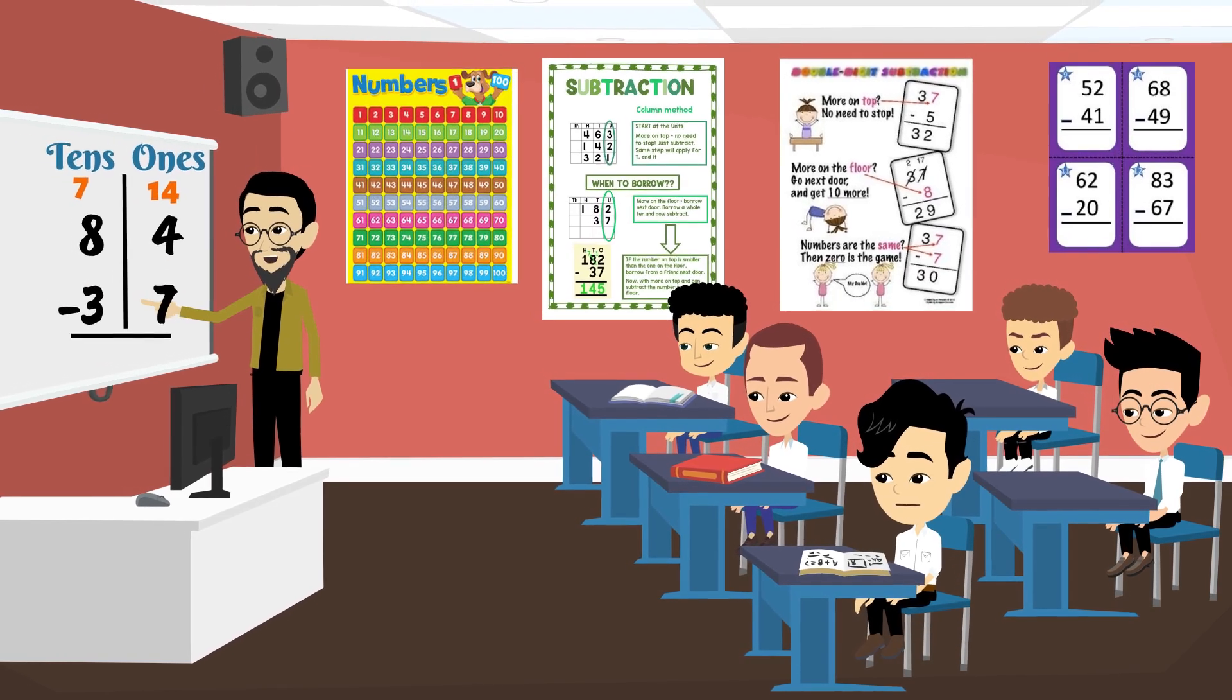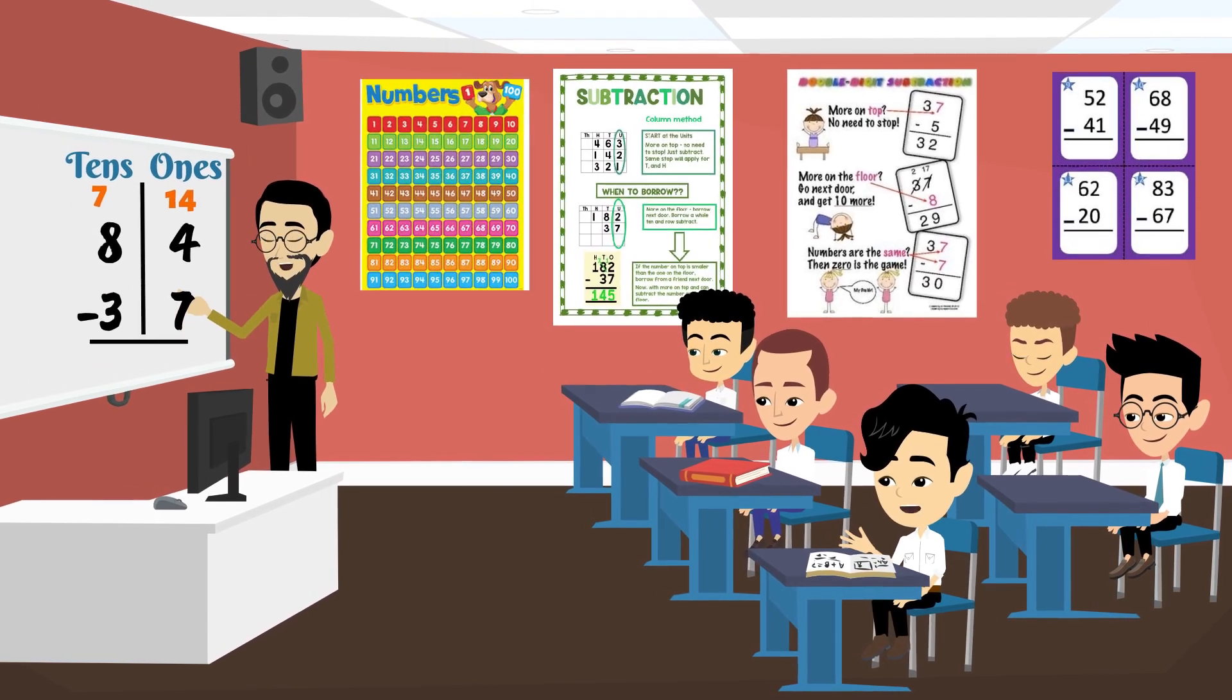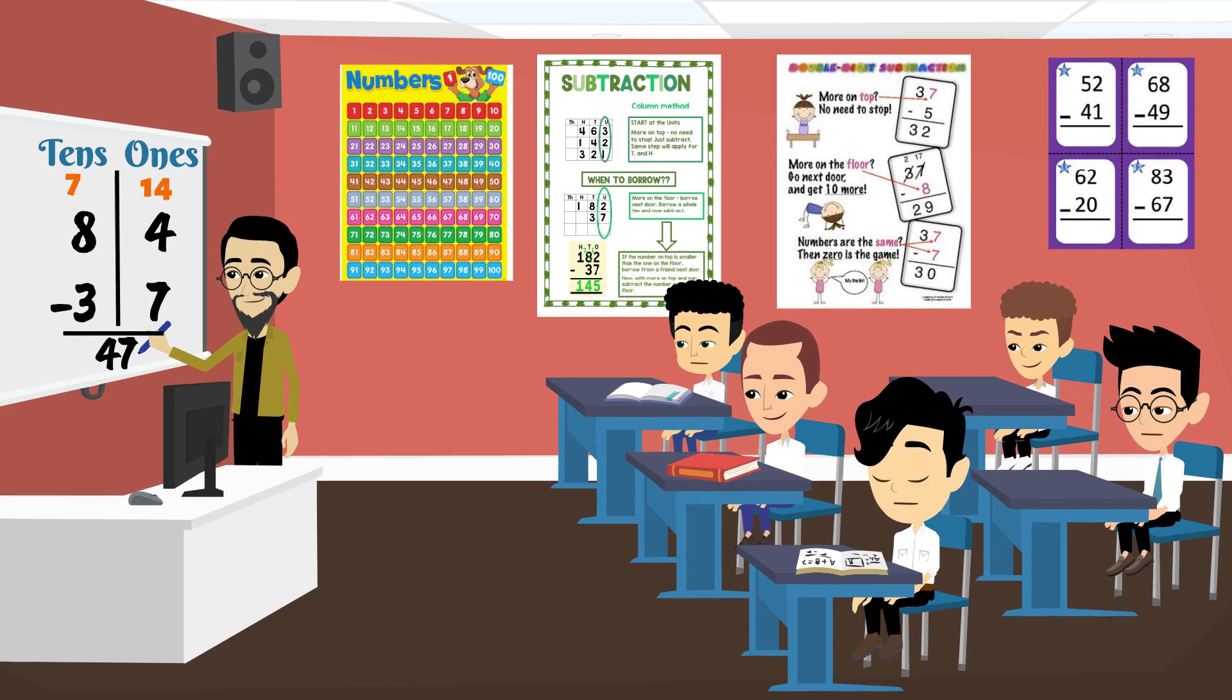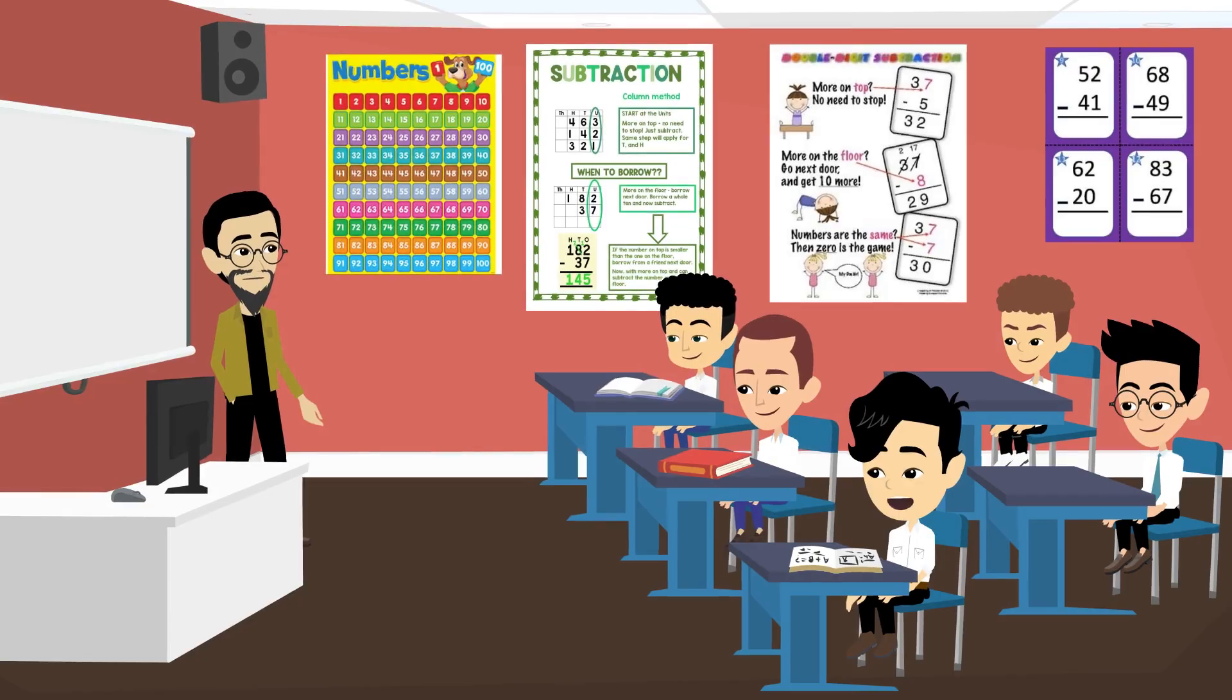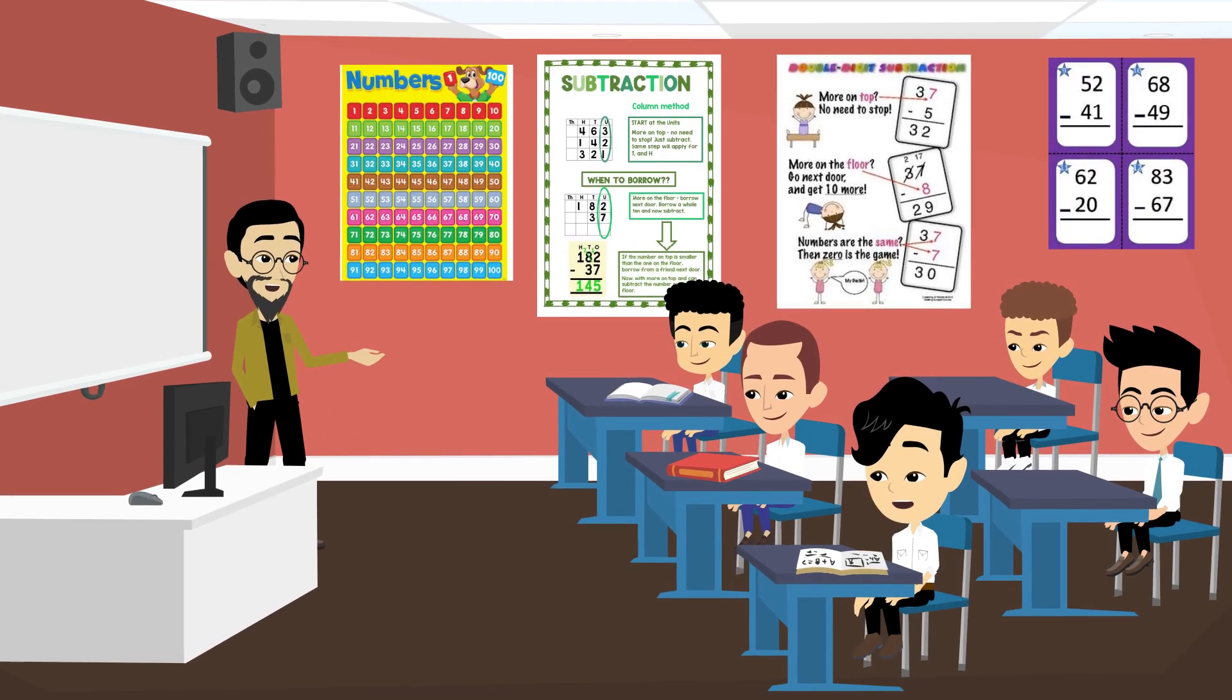So, what is 84 minus 37? 47. Perfect. You're all doing amazing.